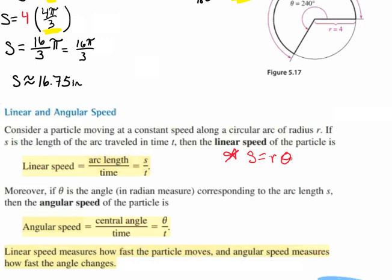Moreover, if theta is the angle in radian measure corresponding to the arc length S, then the angular speed of the particle is the central angle divided by time. Linear speed measures how fast the particle moves, and angular speed measures how fast the angle changes.